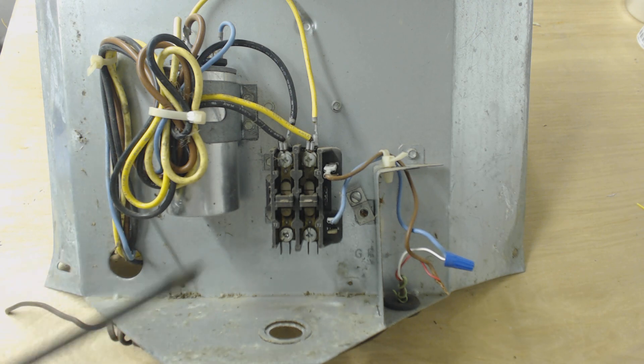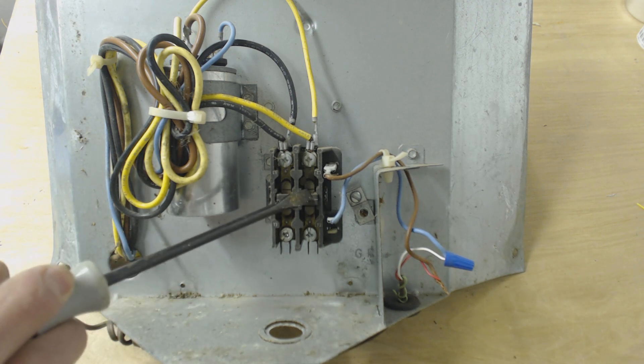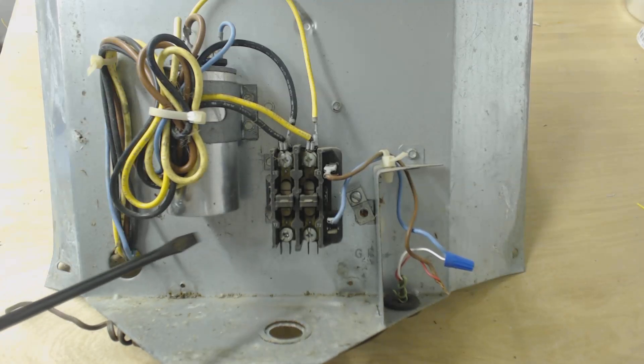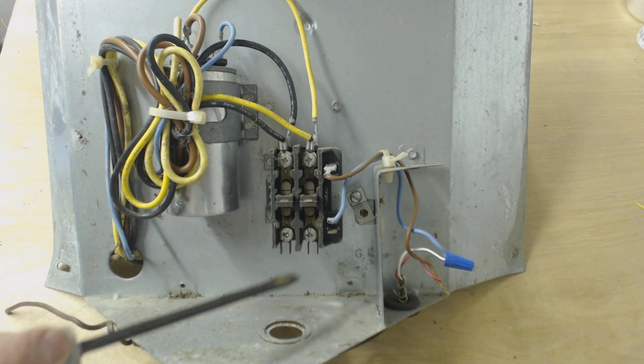Alright, what you have is you have a dual contactor here, a two-pole contactor. What happens is you have 240 volts coming into this. You've got to look at the rating plate on the outdoor condenser.